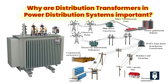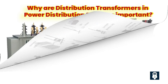Have you ever experienced flickering lights or power outages during peak usage times? Distribution transformers come to the rescue by regulating voltage levels and managing the load on the power grid. They keep the lights steady and our appliances happily humming, even when everyone's cranking up their air conditioning during a heat wave.